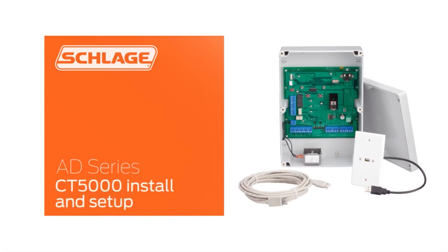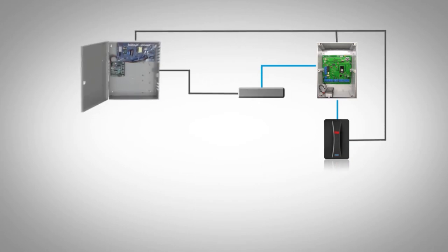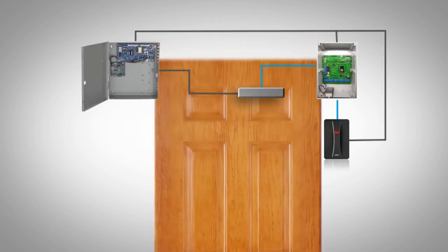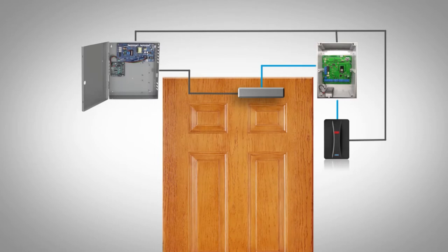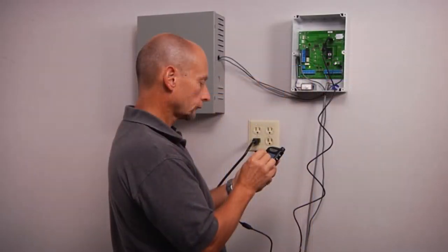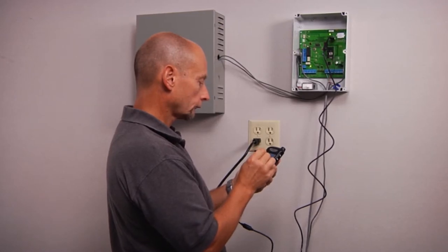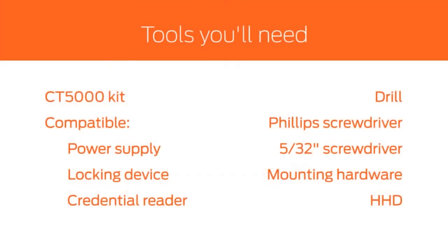This video will show you how to install, connect, and configure your CT5000. The CT5000 is an offline access controller that uses a credential reader, locking device, and separate power supply to provide access to a single opening. The handheld device or HHD is used to configure the CT5000. These are the tools you'll need for this installation.